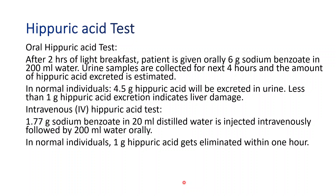In the hippuric acid test, the liver converts sodium benzoate. The liver takes sodium benzoate from the blood and conjugates it with glycine in the liver to form hippuric acid.